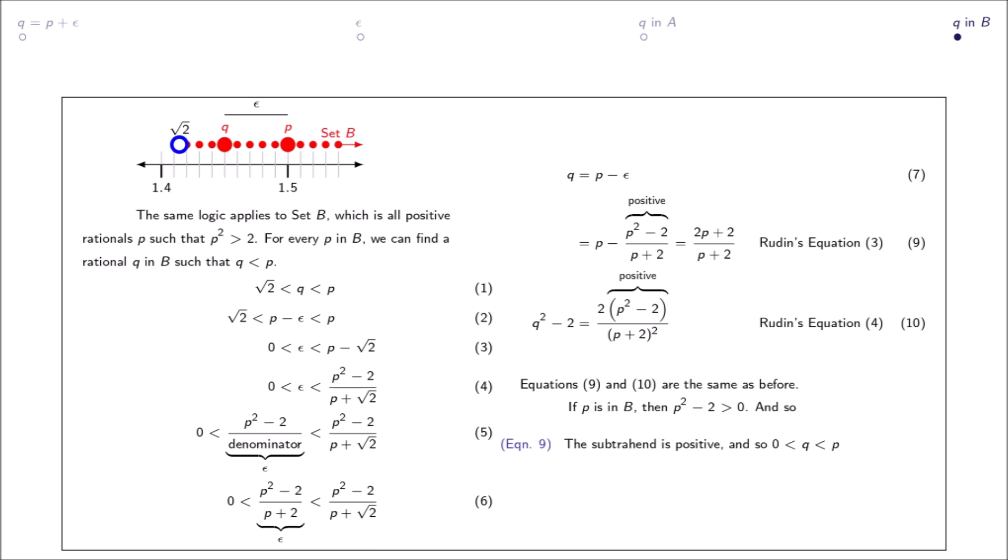And so, by equation 9, the subtrahend is positive and 0 is less than q which is less than p. By equation 10, the equality of positive values means q squared minus 2 is greater than 0, and so q squared is greater than 2. Thus, q is in set B.